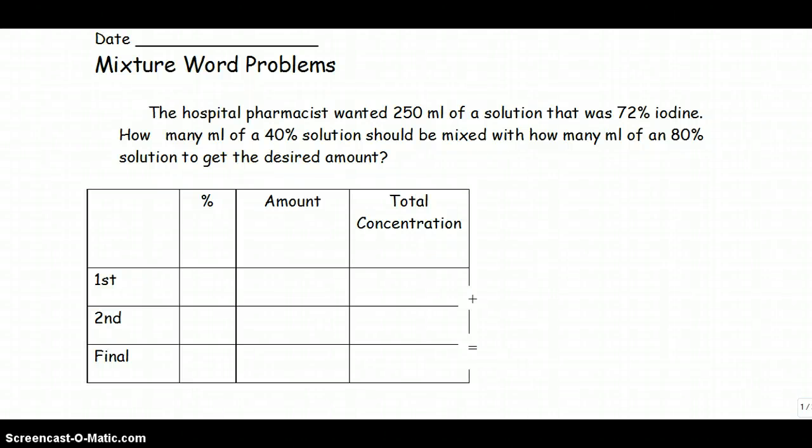Okay, now we're going to look at mixture word problems. These are going to work very similar. First thing we have to do is read through and write down what we know. The hospital pharmacist wanted 250 milliliters of a solution that was 72% iodine. How many milliliters of a 40% solution should be mixed with how many milliliters of an 80% solution to get the desired amount?